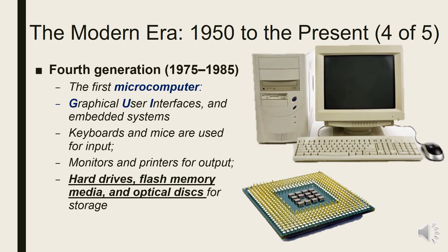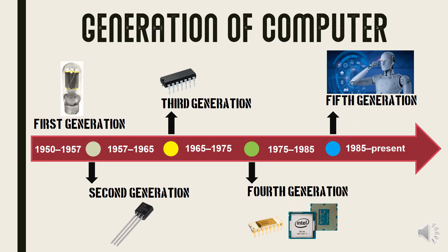The fourth generation of computers spanned from 1975 to 1985. The microprocessor brought this generation, as thousands of integrated circuits were built into a single silicon chip. A microprocessor is used in any computer for logical and arithmetic functions in any program. These microcomputers made use of graphical user interface (GUI) technology and embedded systems, becoming more powerful, compact, reliable, and affordable.